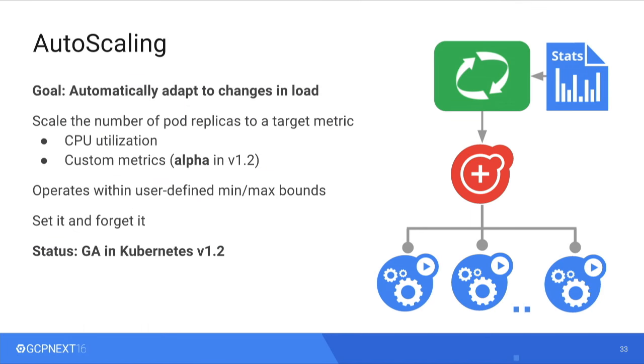The next thing people run into is scaling. What happens if a famous celebrity dies and you need to respond with your application to a change in load? In Kubernetes 1.2, we launched something called a horizontal pod autoscaler. It takes metrics — currently CPU utilization or custom metrics (which are alpha but functional) — and feeds them into the replication system. The replication system can say you've crossed a threshold, let me scale you up, or you've dropped below, let me scale you down. You give it min and max bounds and it operates within those. You set it and forget it. This frees you from having to worry about provisioning new machines at 2am in a different time zone. This is the ethos of Kubernetes — you don't have to worry about it.